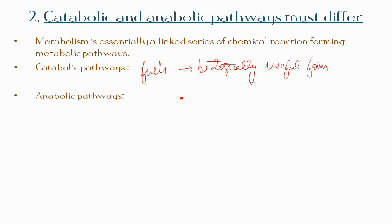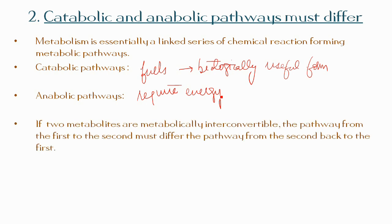If two metabolites are metabolically interconvertible, the pathway from the first to the second must differ from the pathway from the second back to the first.